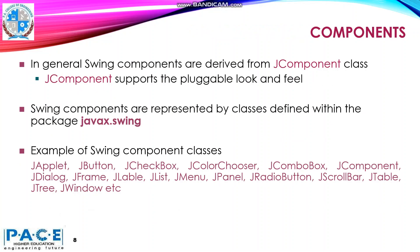Swing components in general are derived from the JComponent class. JComponent supports the pluggable look and feel. Swing components are represented by classes defined within the package javax.swing. Some examples of Swing component classes are JApplet, JButton, JCheckBox, JColorChooser, JComboBox, JComponent, JDialog, JFrame.